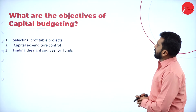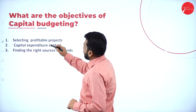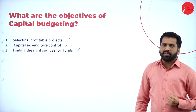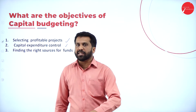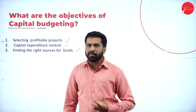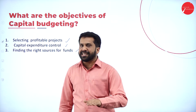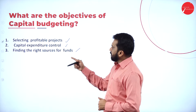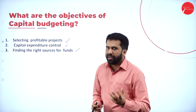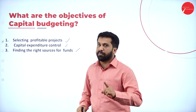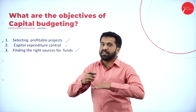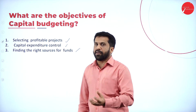The objectives of capital budgeting are three: first, selecting the most profitable project — if there are 10 projects, select two or three that give you more profit. Second, capital expenditure control — analyze each project and go for the one with less expenditure. Third, finding the right source of funds — once you select your project, identify where to invest from. But remember, don't always go for the least price; if a moderate-cost option gives more return, go for that instead.